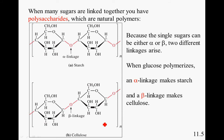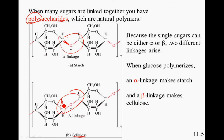When many sugars are linked up together, you have a polysaccharide — poly means many — which are natural polymers. Because the single sugars are either alpha or beta, two different linkages arise. When glucose polymerizes, the alpha linkage makes starch — remember, alpha was pointing down. And a beta linkage produces cellulose — remember, the OH is pointing up, so instead of going straight up, it's now angled up.